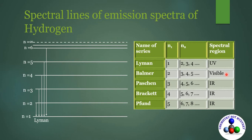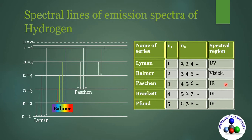When the electron returns to the second level from any higher level, it emits radiation belonging to the visible region and lines in this region are named as the Balmer series. When the electron returns to the third level, it emits radiation in the IR region named as the Paschen series. When it returns to the fourth level, lines are named as the Brackett series. When it returns to the fifth level, lines are named as the Pfund series.